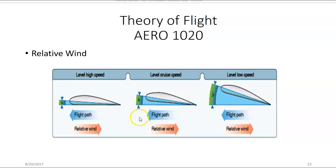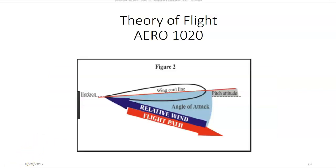The angle of attack can vary based on the speed of your aircraft. High speed requires a low angle of attack. Slower speeds require a high angle of attack. Here is another illustration of angle of attack. The wing chord line runs from the leading edge of the airfoil back to the trailing edge — it's a straight line. The angle between the chord line of the airfoil and the relative wind is known as the angle of attack.